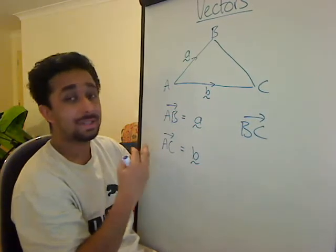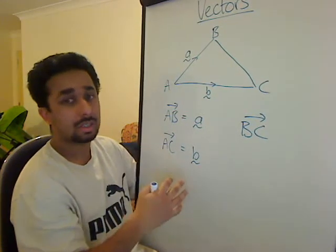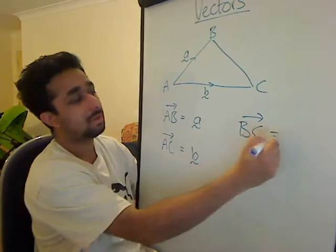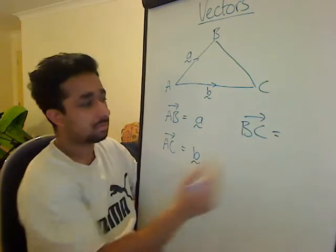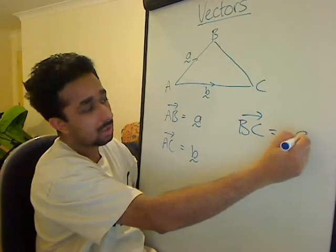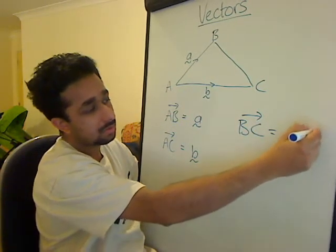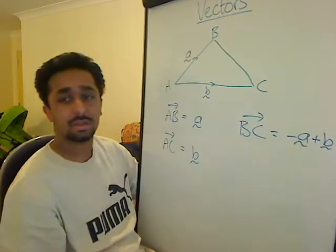So you have to follow the vectors. Okay, but you can make new tracks, like we're about to hear. B to C is minus A plus B. Minus A plus B. Done.